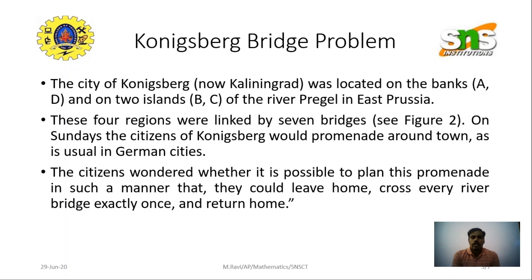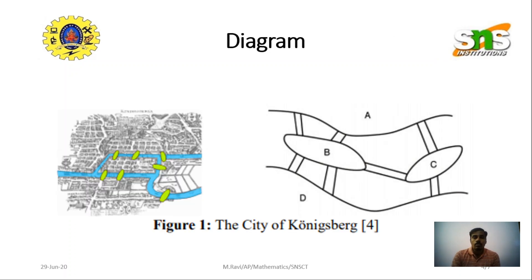On any Sunday, the citizens of Königsberg would take a promenade around town, as was usual in German cities. The citizens wondered whether it is possible to plan this promenade in such a manner that they could leave home, cross every river bridge exactly once, and return. This is the main problem.